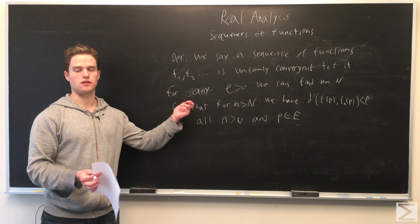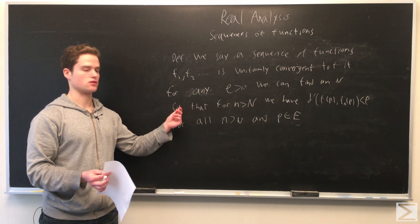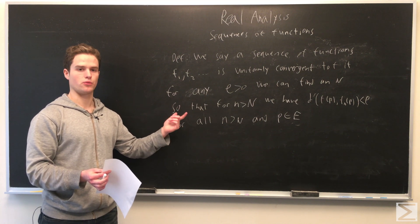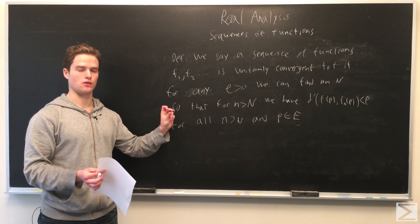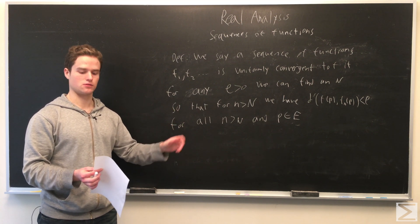This is basically saying this sequence of functions gets as close as we want at every point, so there's no point that is always some distance away. It gets arbitrarily close to the function uniformly across the metric space.